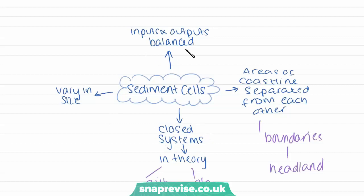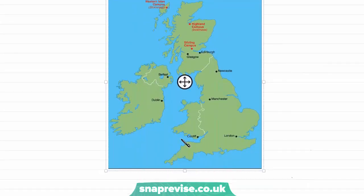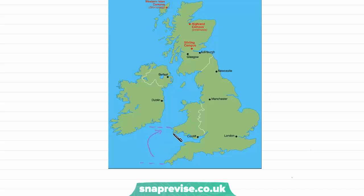Because these are closed systems, the inputs and outputs into sediment cells are balanced. To give an idea of what a sediment cell looks like, taking this area of coast around the bottom of Wales and around Cornwall — this whole area between these two pieces of headland is a sediment cell. Sediment is merely staying and being transported in and around this specific area because it's cut off by these two pieces of headland. Sediment cells can be very small or as large as this example, and sand is not being transported out of or into these closed specific areas.